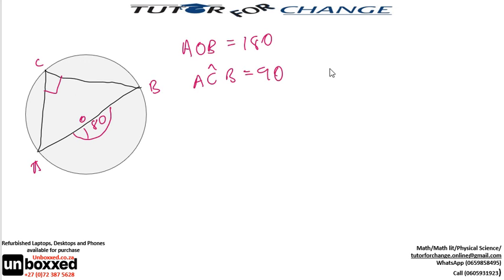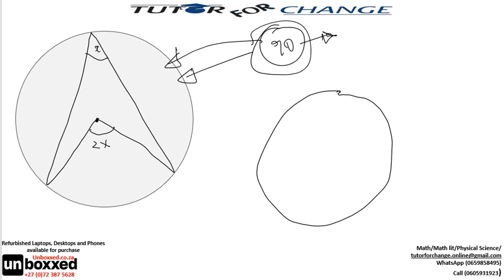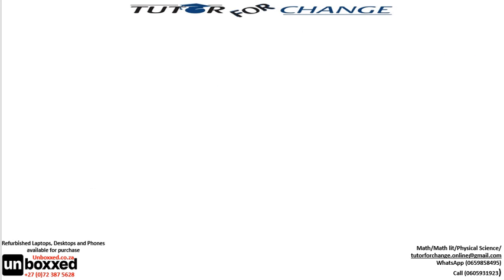And what is your conclusion? Your conclusion is angle at center is equal to twice angle at circumference. Then you are done, as long as you have proven this theorem which I stated is very important. You can use it to prove other theorems.